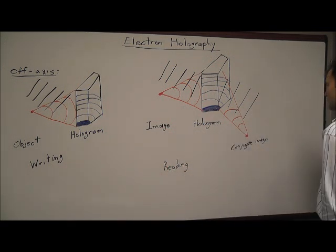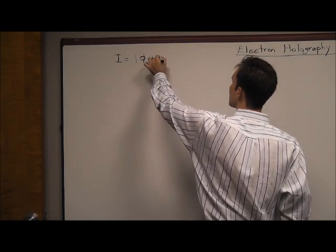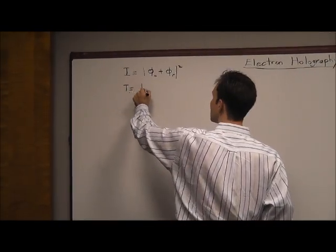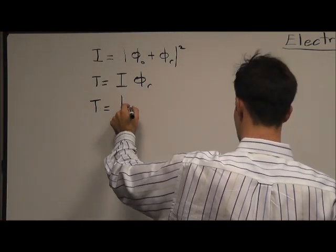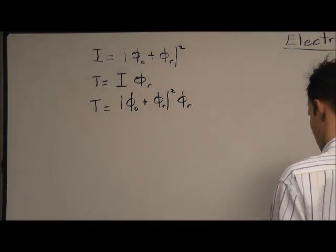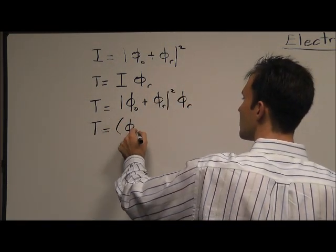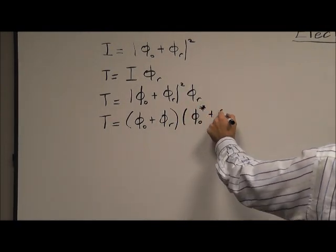Mathematics can be used to highlight the presence of the conjugate image. The interference is defined as the magnitude squared of the sum of the object and reference waves. The transmitted amplitude is equal to the interference multiplied by the wave used for reconstruction, which is the reference wave. Substituting in the expression for the interference and noting that the magnitude squared of an expression is the expression multiplied by its complex conjugate, symbol algebra reduces the expression for the transmitted amplitude to three terms.